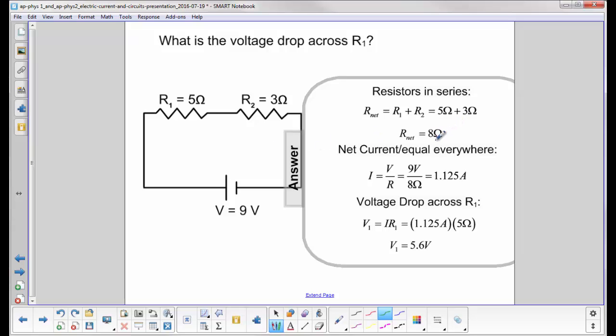So to find the equivalent resistance, we get 5 plus 3, which is 8 ohms. We know the current is the same everywhere in a series circuit, so that would be the battery voltage over the equivalent resistance, 9 divided by 8, 1.125 amps.